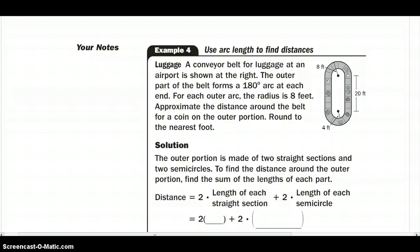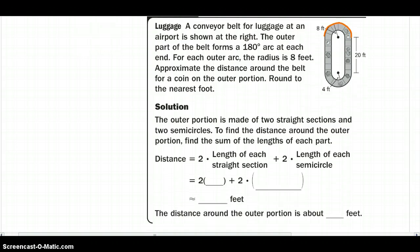So the luggage on the conveyor belt at the airport is shown at the right. The outer part of the belt is 180 degrees arc at each end. For each outer arc, the radius is 8 feet. Approximate the distance around the belt for a coin on the outer portion round to the nearest foot.